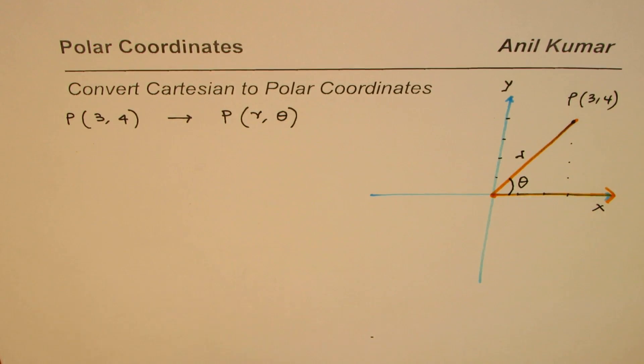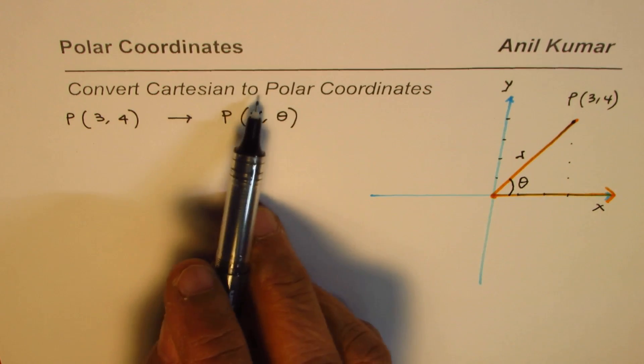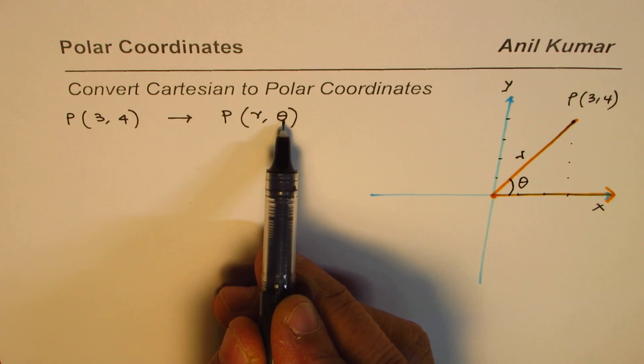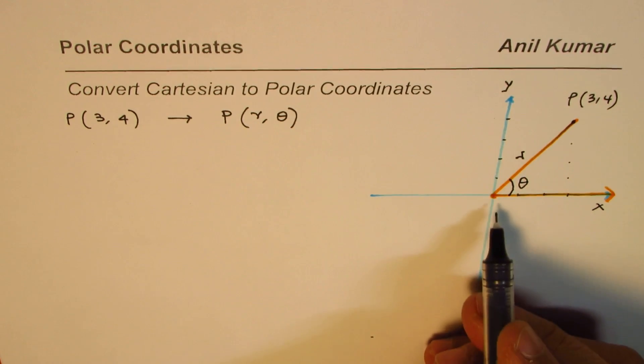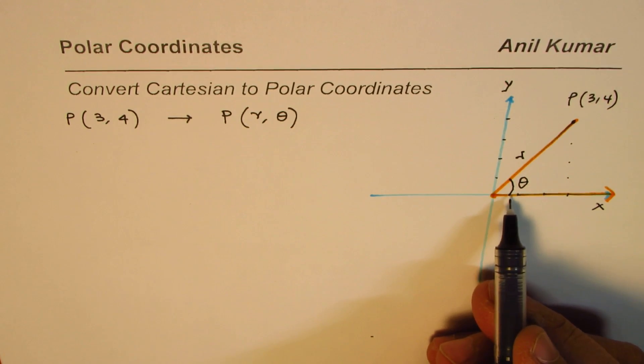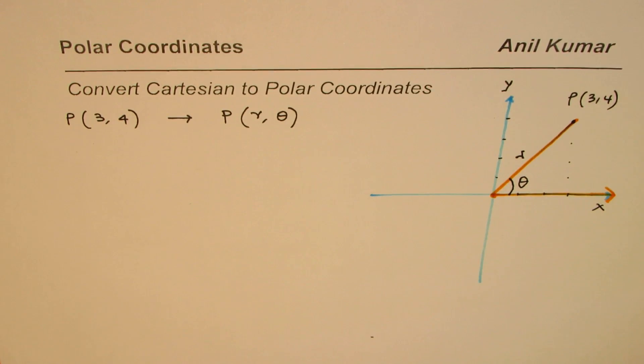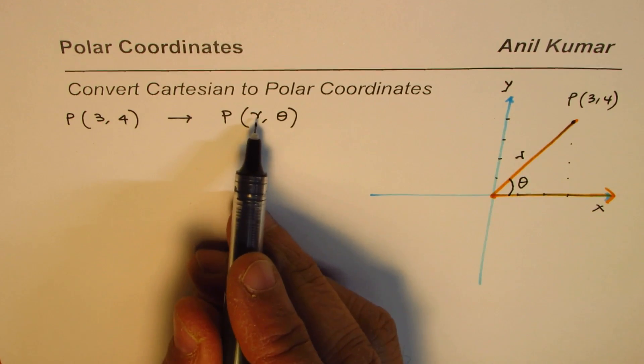So that is what we mean when we say convert Cartesian to polar coordinates. That means find the value of r and find the value of theta. Distance from the pole and the counterclockwise angle theta. This is what we want. Let us see how to calculate this.